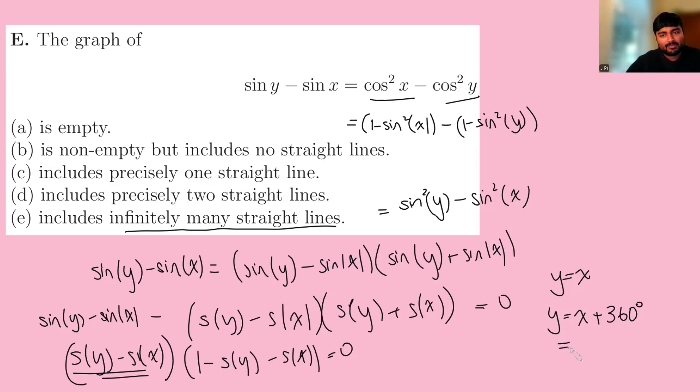Also, if I replace 360 with two lots of 360, so 720, this will always also be a straight line on this graph when y equals x plus 720. That will also make this bracket here zero and therefore be a straight line, which would be on this graph. And you can continue this.